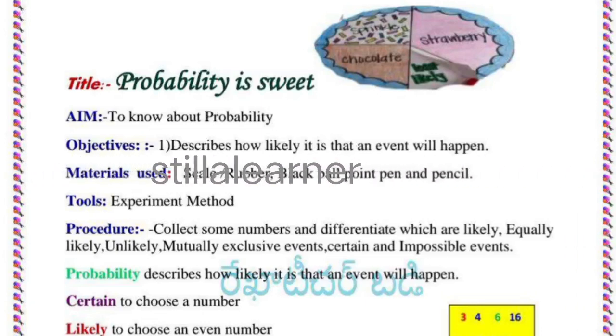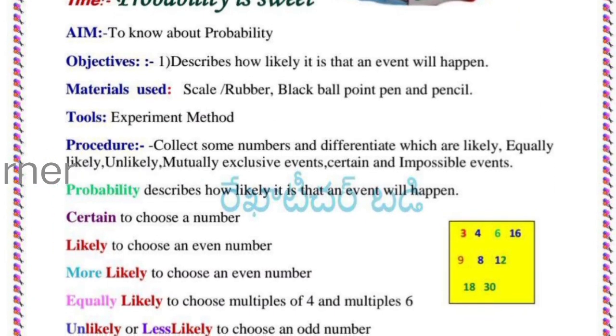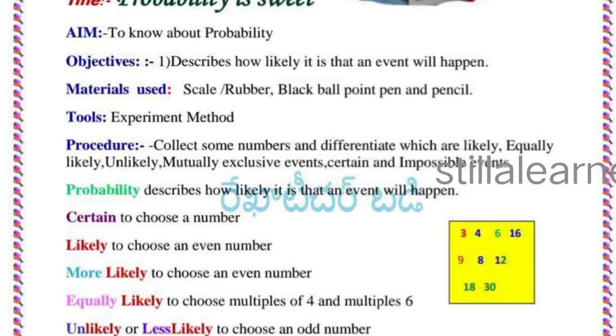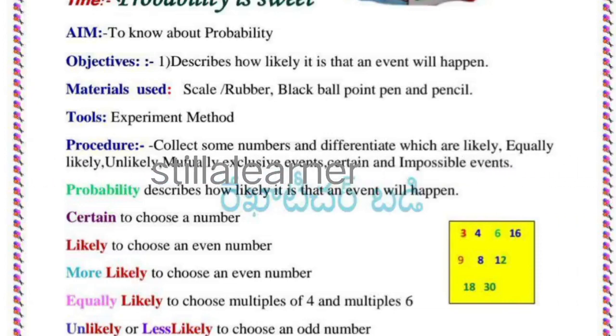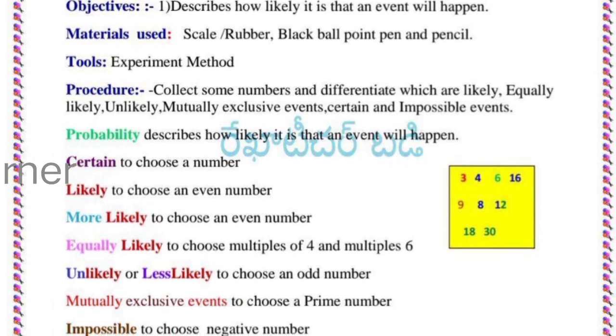Tools: experiment method. Procedure: collect some numbers and differentiate which are likely, equally likely, unlikely, mutually exclusive events, certain and impossible events. Probability describes how likely it is that an event will happen.